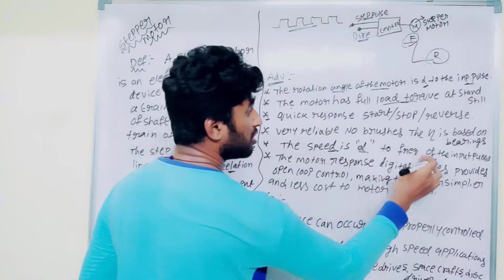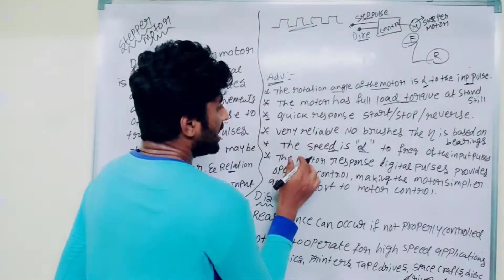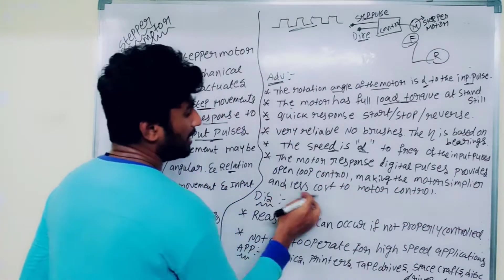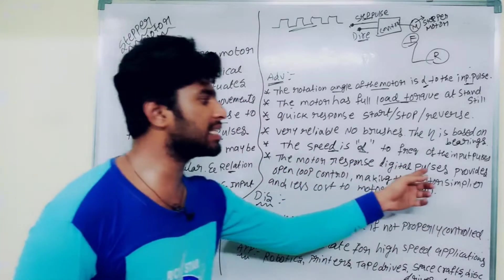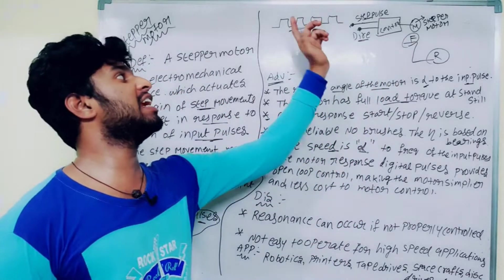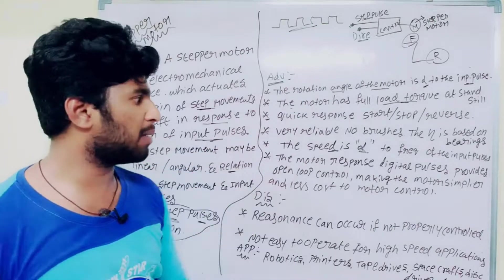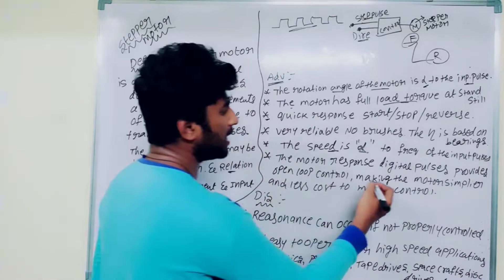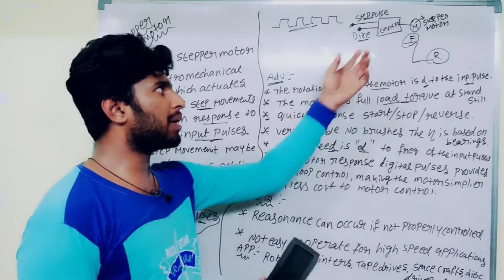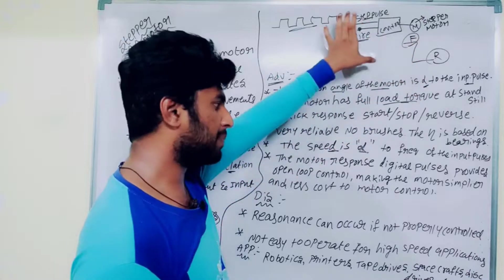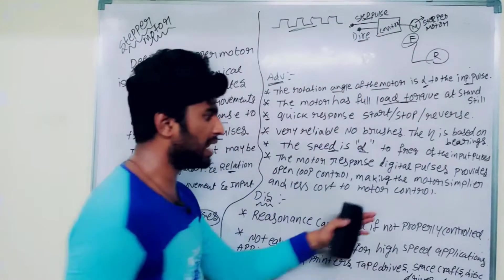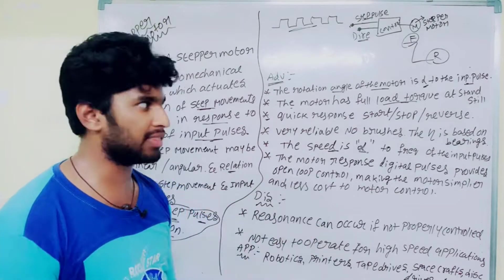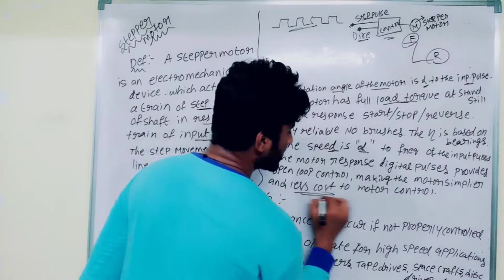The speed is directly proportional to the frequency of the input pulses. The sixth advantage is that if we have digital pulses, we can provide open loop control. We will make the motor simpler. If we control it with digital pulses, it will be easy — we don't need any feedback signal or direction signal. We decide this with the controller, which makes less cost for motor control.